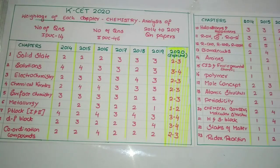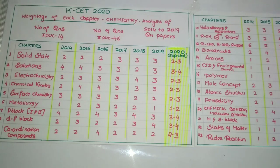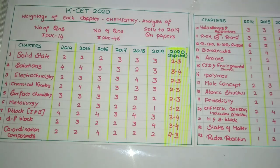Hello, my dear students, this is your Pallavi ma'am. As I was getting many comments where many of you are asking for the PDF files of the mind map as well as the weightage of each chapter — where I have analyzed the 2014 as well as 2019 papers — you can see the number of questions from the first PUC is 14 questions in your question paper, and the number of questions from the second PUC chapters will be around 46 questions.